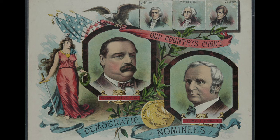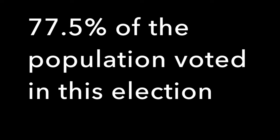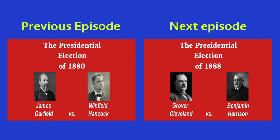Cleveland's victory broke the longest losing streak for any major political party in American history, which was six consecutive elections. As a matter of fact — and this is a spoiler alert — Cleveland was the only Democratic president between 1861 and 1913. I'll see you for the next election.